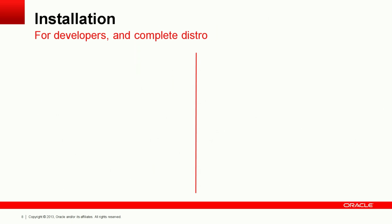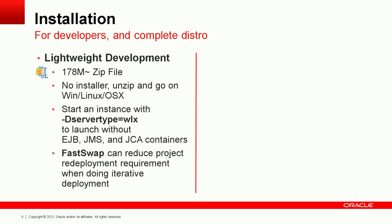For the installation process of WebLogic, there are two types. One is for the development environment, which is not supported for production. It is a 180-megabyte zip file that can simply be extracted and configured on any environment such as Windows, Linux, and OSX. You can reduce the footprint by disabling EJB, JMS, and JCA containers by calling the server type parameter. You can also increase development productivity by enabling Fast Swap, which allows you to interactively redeploy your Java classes in WebLogic.